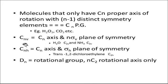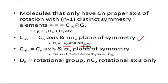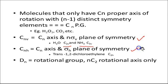The point group will be CnV when a Cn axis and σV plane are both present. For example, H2O has C2V, and for ammonia NH3 it is C3V, because there is a Cn axis of rotation and a σV plane of symmetry.